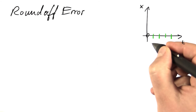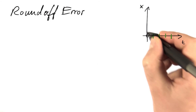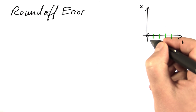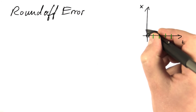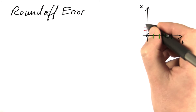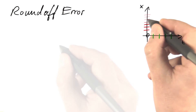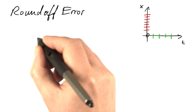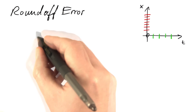Up to now, we have only dealt with the effect of a finite time step, but actually the representation of values on the x-axis is also coarse-grained. Now we have a look at what this leads to.